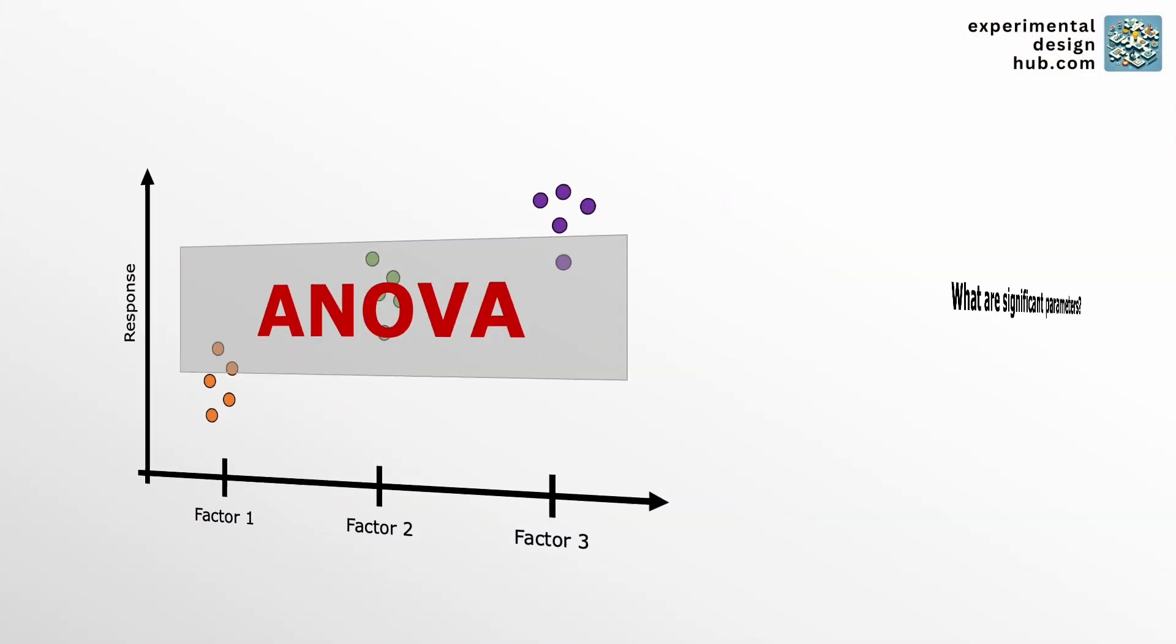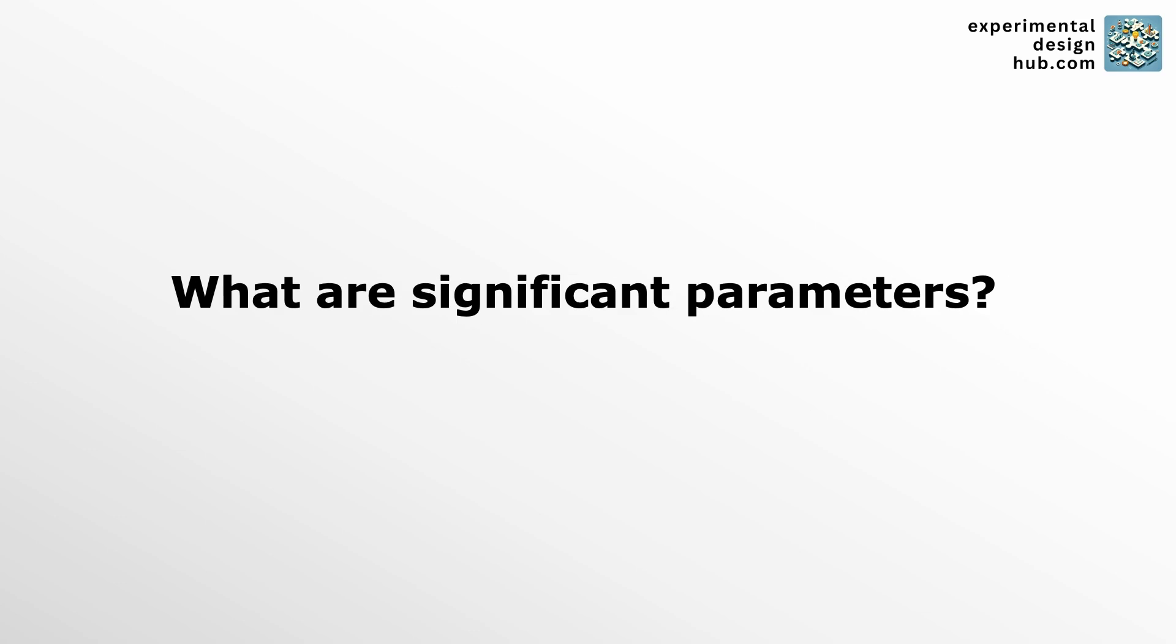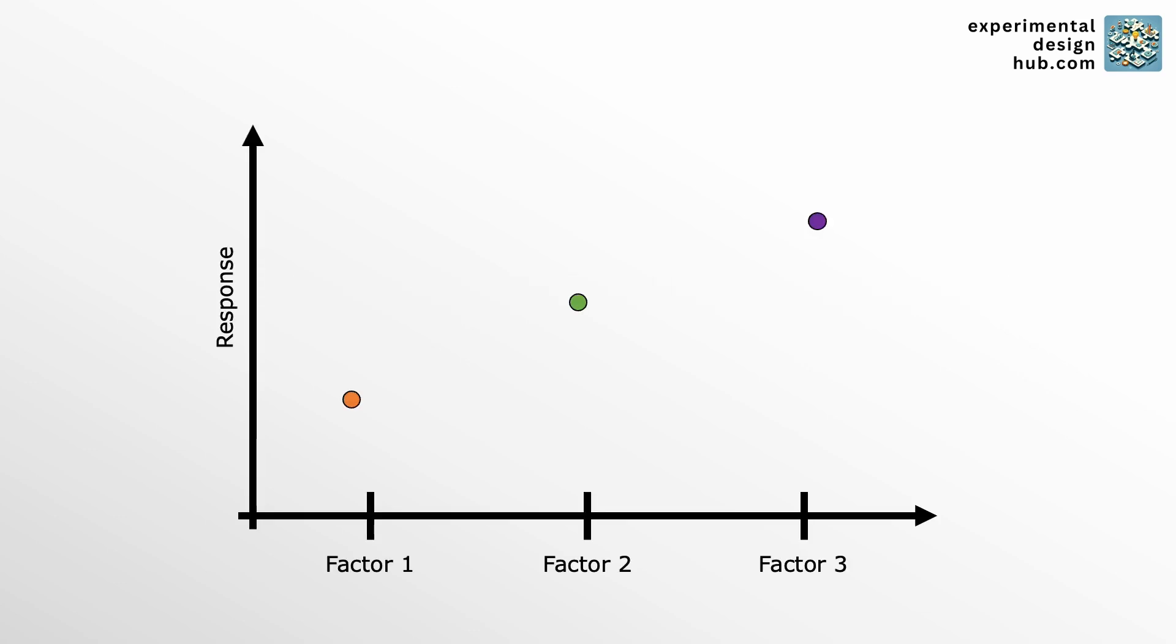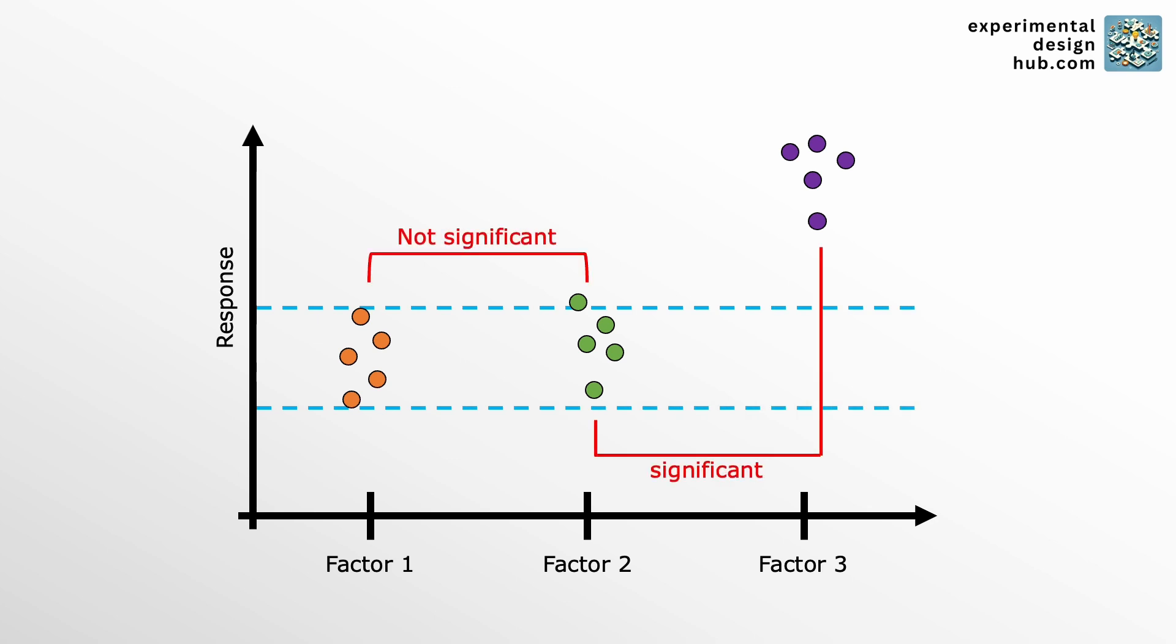And we start with the concept of significant parameters. In any experiment it's crucial to identify which factors significantly impact your results. These significant parameters are the factors that cause real changes in your response variable beyond what might happen due to random chance.